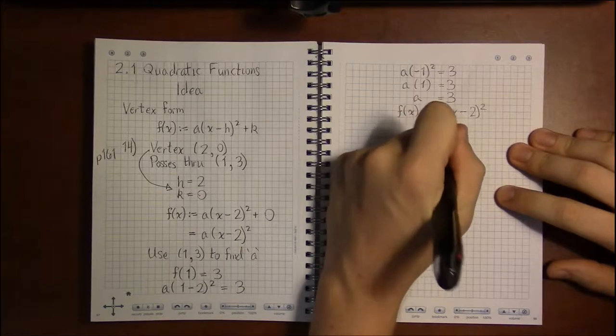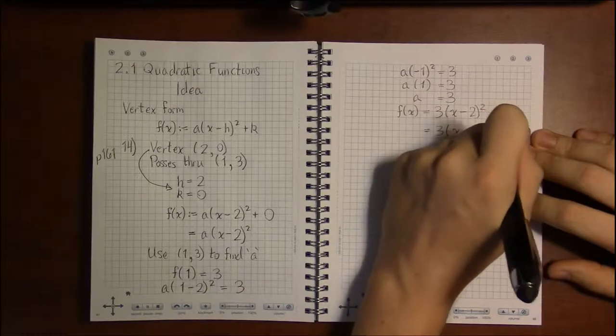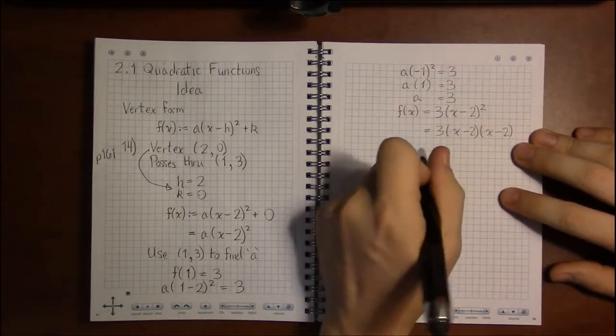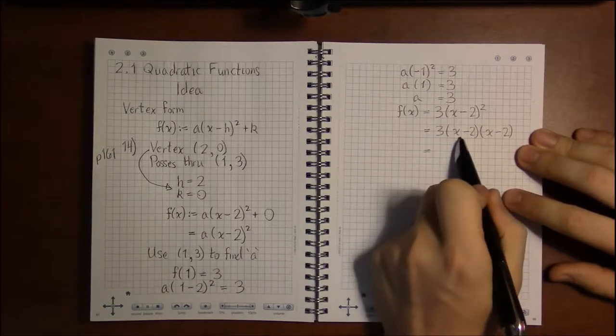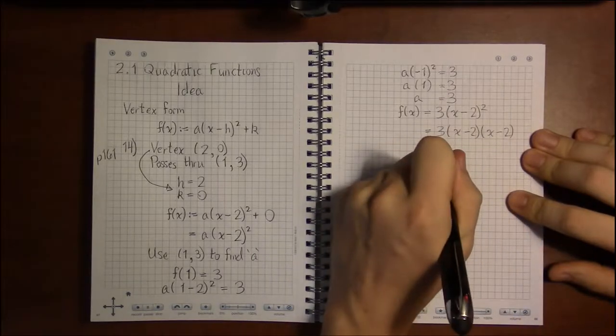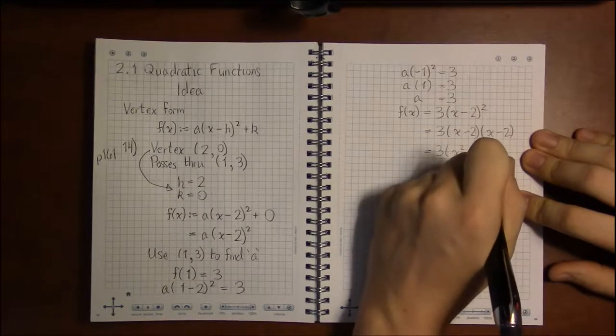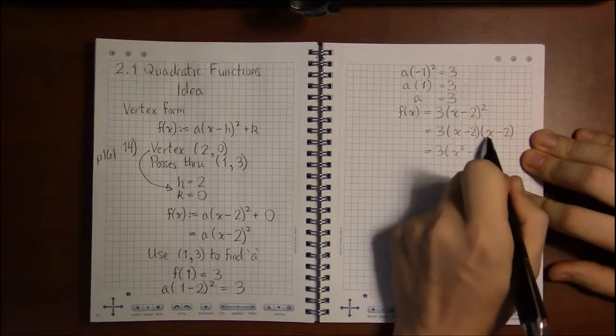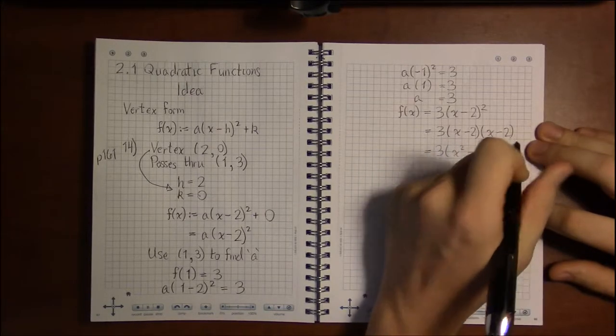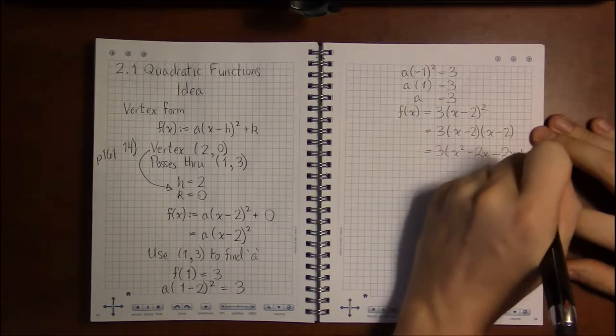So squaring (x - 2) amounts to taking (x - 2) times itself. If we FOIL these two factors or distribute these two factors, we get x² - 2x - 2x, which is -4x, plus 4.